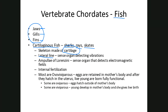Another important feature is the ampullae of Lorenzini — a special sense organ that allows these organisms to detect electromagnetic fields. This is another way that they can sense out prey.